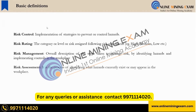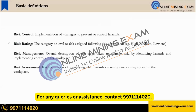Here are some more basic definitions. What is risk control? Risk control means — whatever risk is available — you need to keep that risk controlled. It is the implementation of strategies to prevent or control hazards. What is risk rating? There are different types of risks available; some risks can be more harmful and some less harmful, so risk rating is the categorization of risks by how vulnerable or harmful they are.